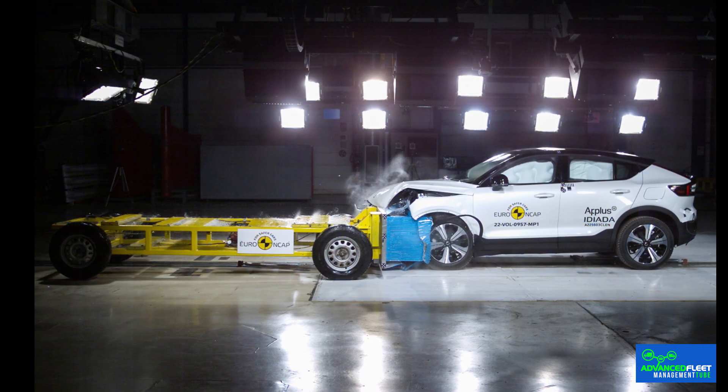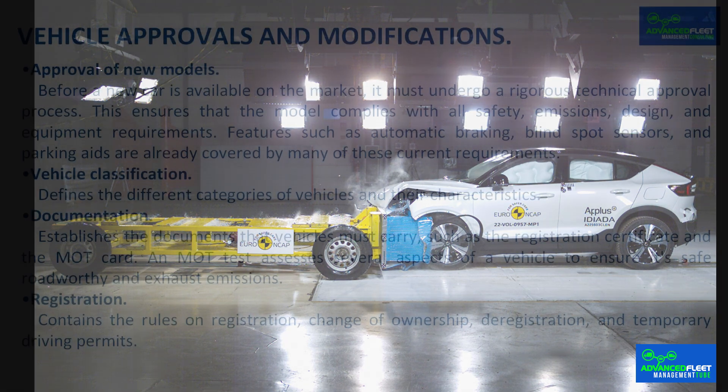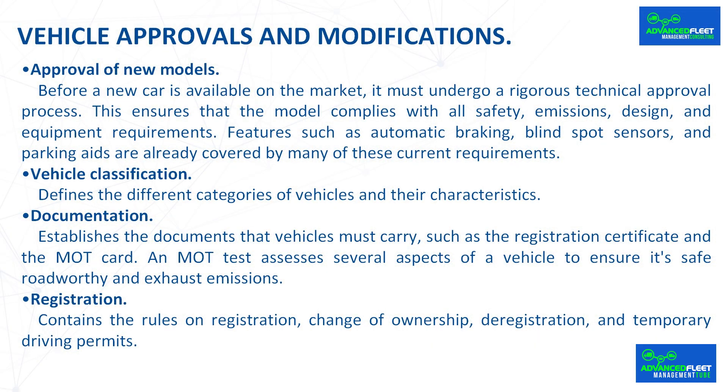Vehicle approvals and modifications. Before a new car is available on the market, it must undergo a rigorous technical approval process. This ensures that the model complies with all safety, emissions, design, and equipment requirements. Features such as automatic braking, blind spot sensors, and parking aids are already covered by many current requirements. Vehicle classification defines the different categories of vehicles and their characteristics. Documentation establishes the documents that vehicles must carry, such as the registration certificate and the MOT card.